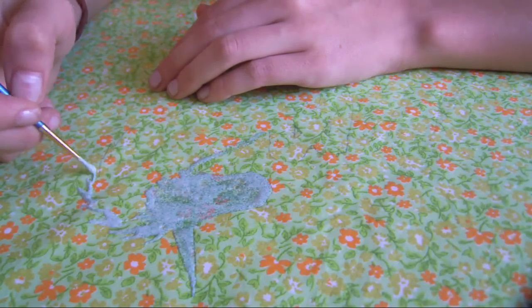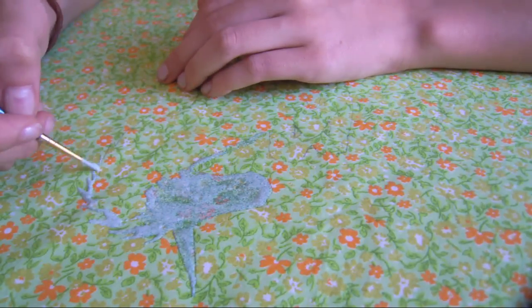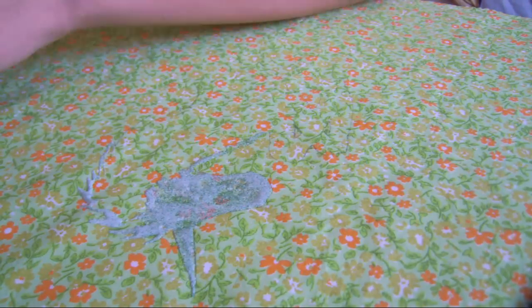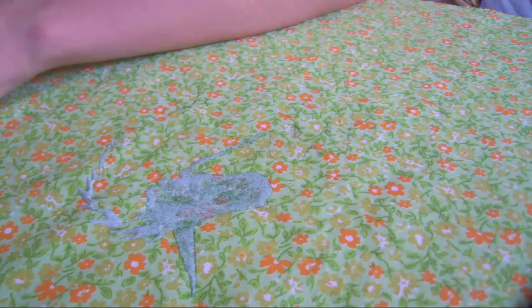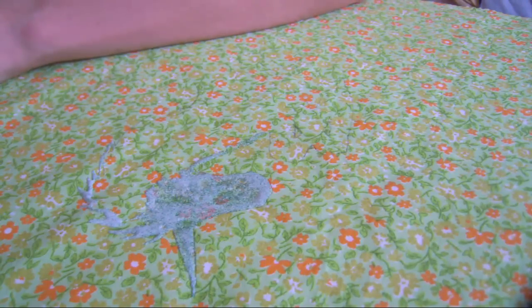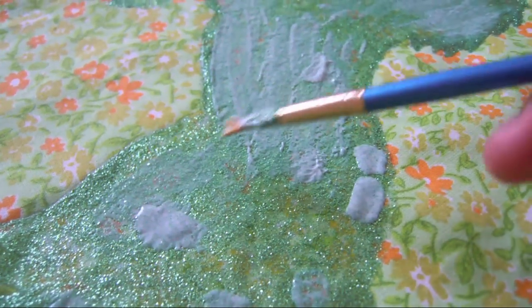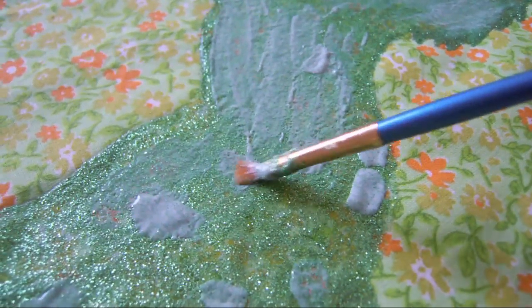Depending on how thick your fabric is and how much glue you're using, you may want to protect your surface with a plastic sheet. Just don't use paper as it will stick to your fabric. Keep adding layers until you're happy with the way it looks. You can add more glitter in the areas where your unicorn looks a little naked, because we don't want that.